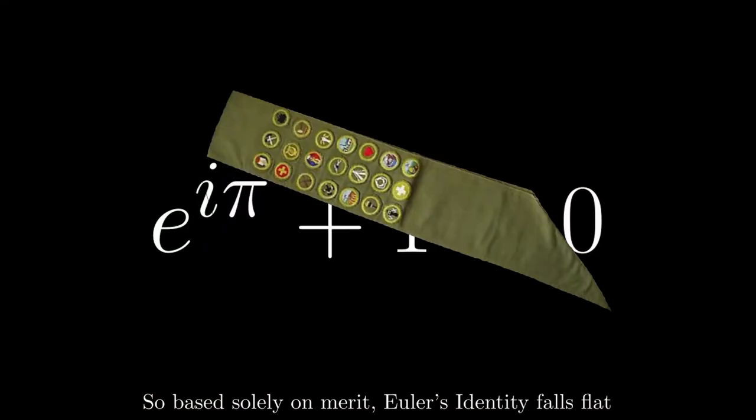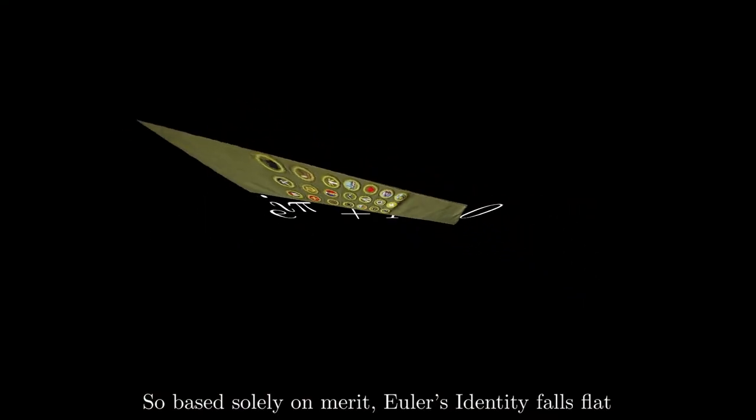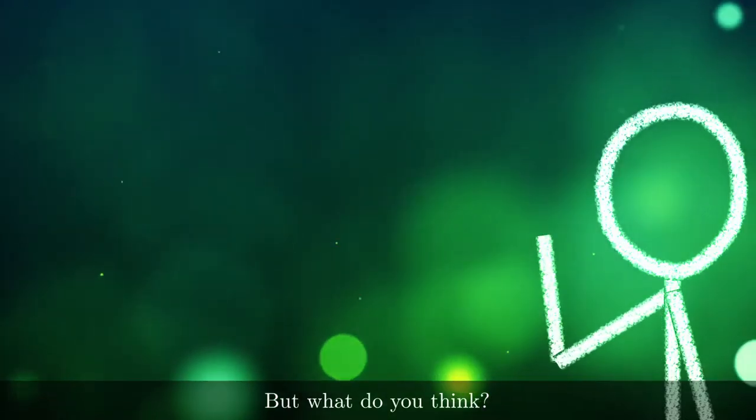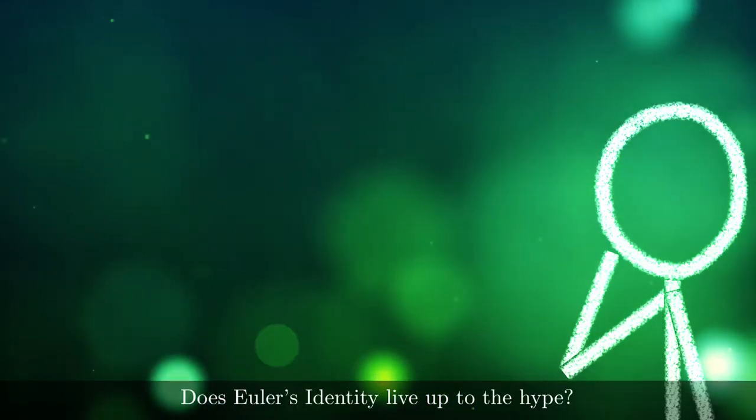So based solely on merit, Euler's identity falls flat. Just like the Mona Lisa. But what do you think? Does Euler's identity live up to the hype?